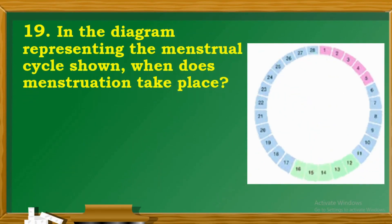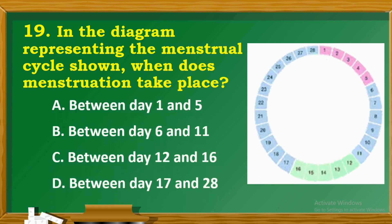Question 19: In the diagram representing the menstrual cycle shown, when does menstruation take place? A. Between day 1 and 5. B. Between day 6 and 11. C. Between day 12 and 16. D. Between day 17 and 28.